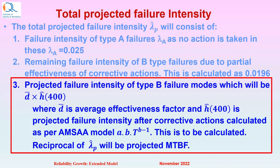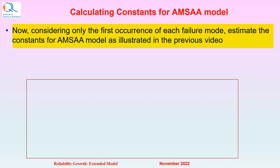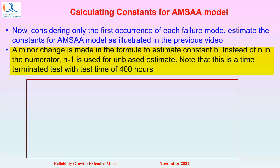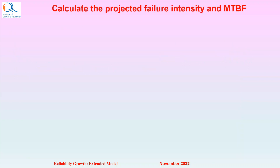The reciprocal of lambda P predicted will be the projected MTBF value. The next step is to calculate constants A and B for the AMSAA model. Considering only the first occurrence of each of the B-type failure modes, we estimate the constants for the AMSAA model as illustrated in the previous video. There is a minor change in the formula to estimate constant B — instead of N in the numerator, N minus 1 is used for an unbiased estimate. Note that this is a time-terminated test with a test time of 400 hours.